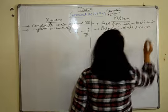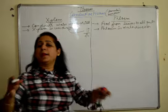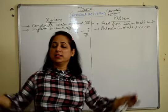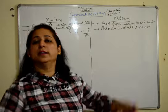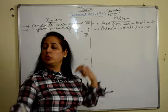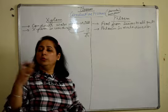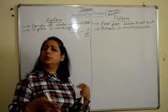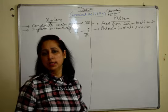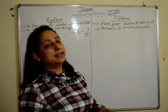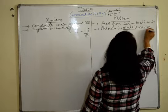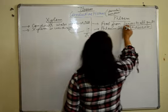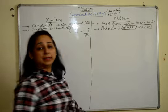Phloem is multi-directional, because the plant has several parts — side branches, below roots. So food has to be transported to all the parts, making it multi-directional. It moves to all the parts of the plant.